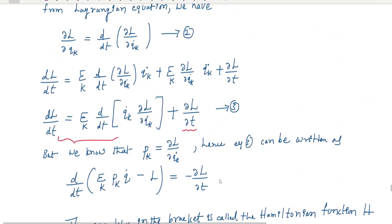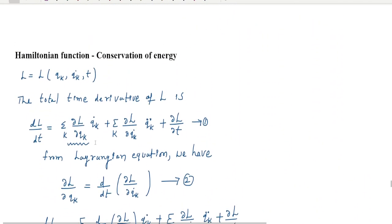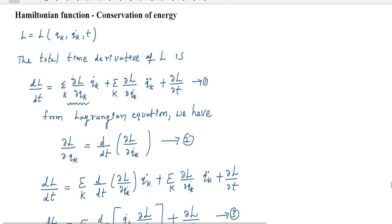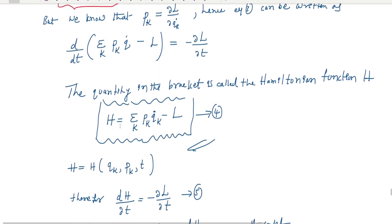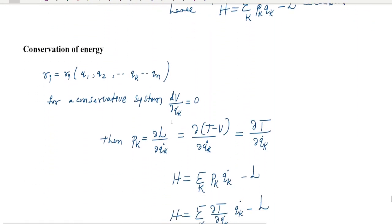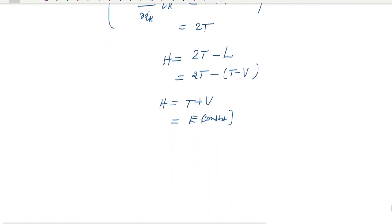In summary, we started from the Lagrangian and derived the Hamiltonian function H = summation k pk·q̇k − L. The final conclusion is the conservation of energy: for a conservative system where time does not appear explicitly in the Lagrangian, the Hamiltonian equals the total mechanical energy and is conserved.